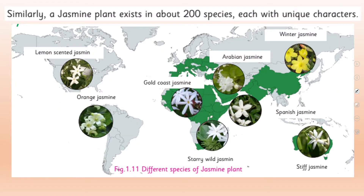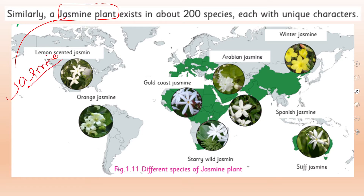If we look at plants, jasmine is a common name of a plant and we have 200 different species and kinds of jasmine all around the world. In different places across the whole world, you will see one species of jasmine or another.